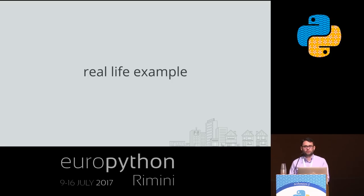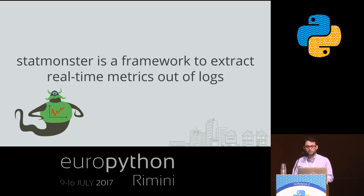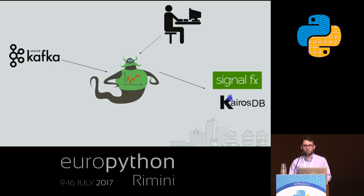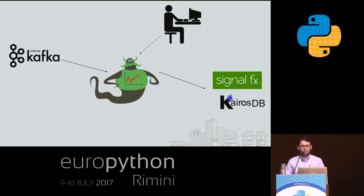We're going to look at the class-based interface of an example, then see how we can rewrite it with decorators. The example is StatMonster — a real internal framework at Yelp to extract real-time metrics from logs, where logs are a stream of events. StatMonster consumes logs from Apache Kafka — a distributed streaming platform used to carry logs around your infrastructure — then does some custom logic implemented by users via an API, and emits metrics to SignalFX, a third-party service for visualizing and analyzing metrics, and to KairosDB, a fast distributed scalable time-series database on top of Cassandra.